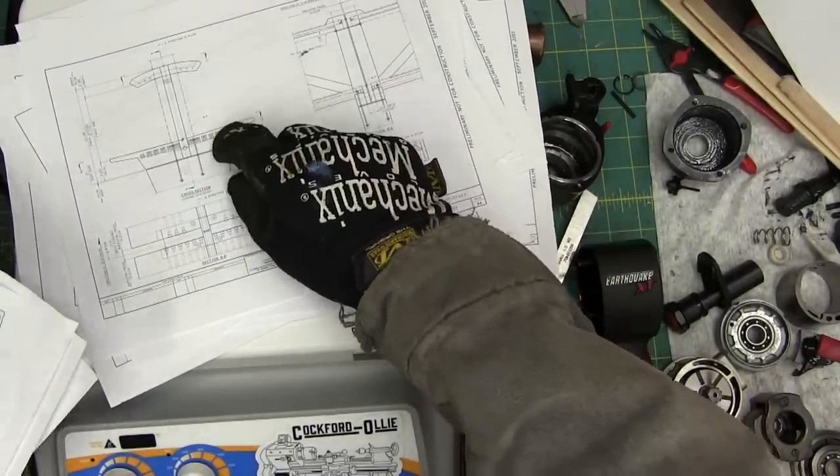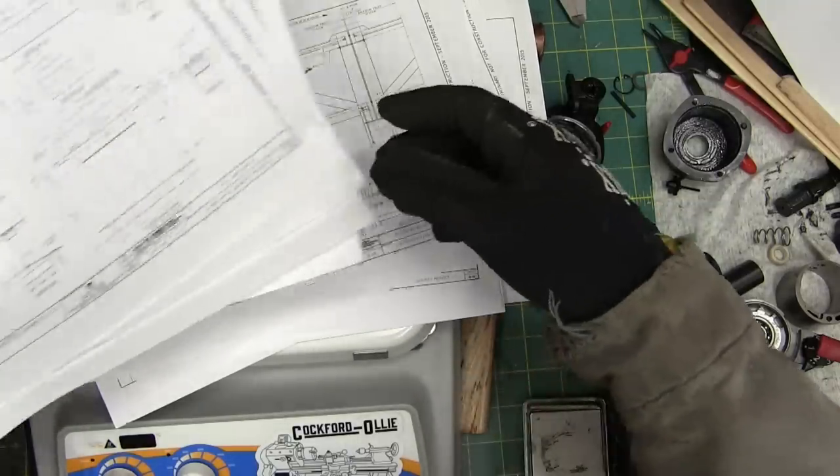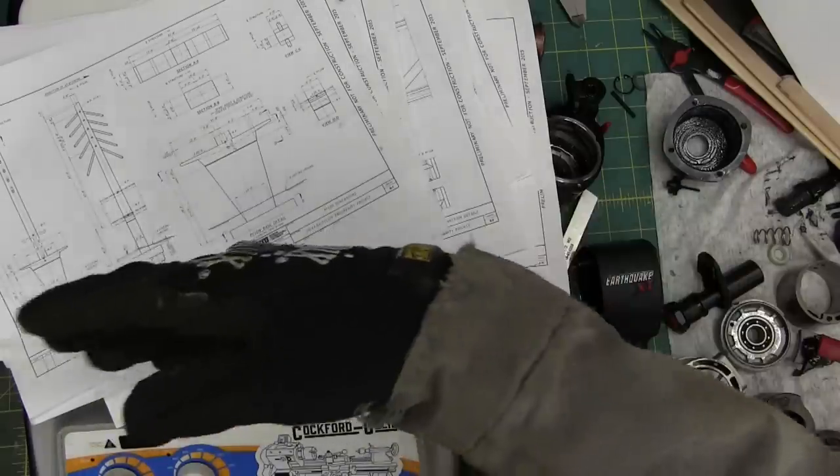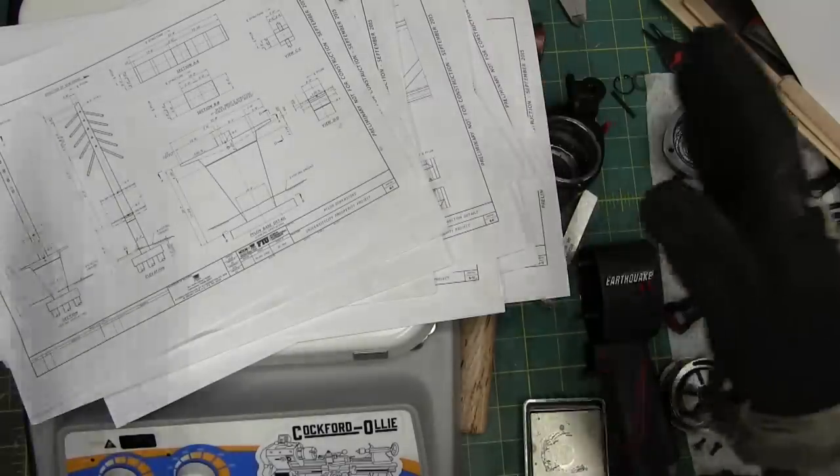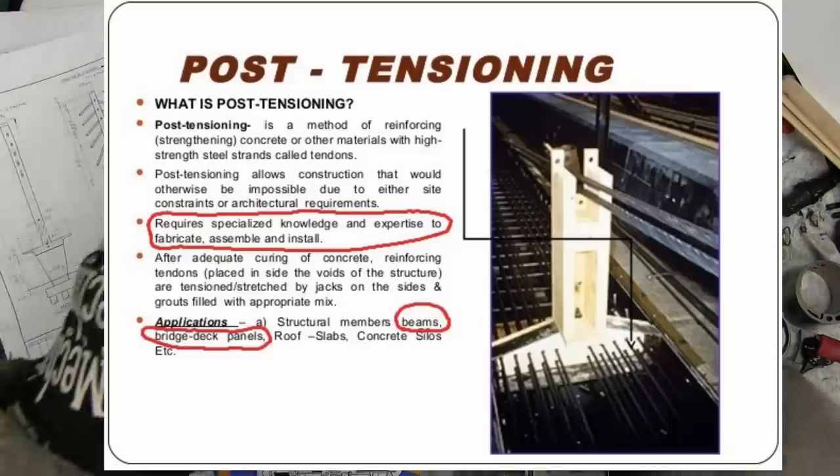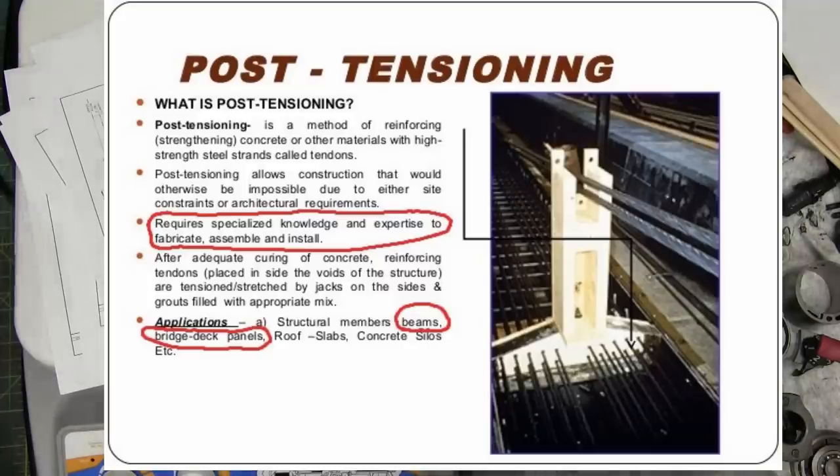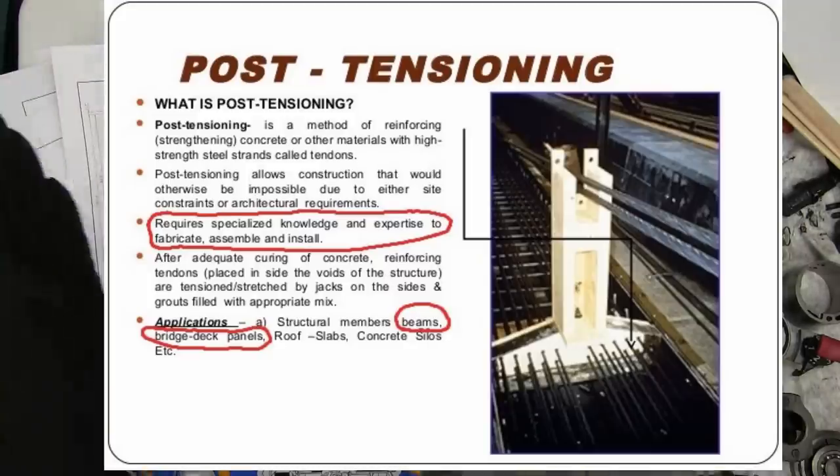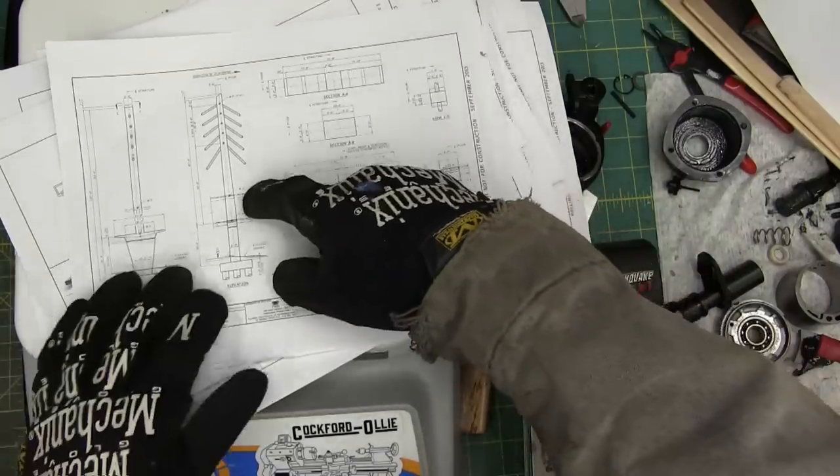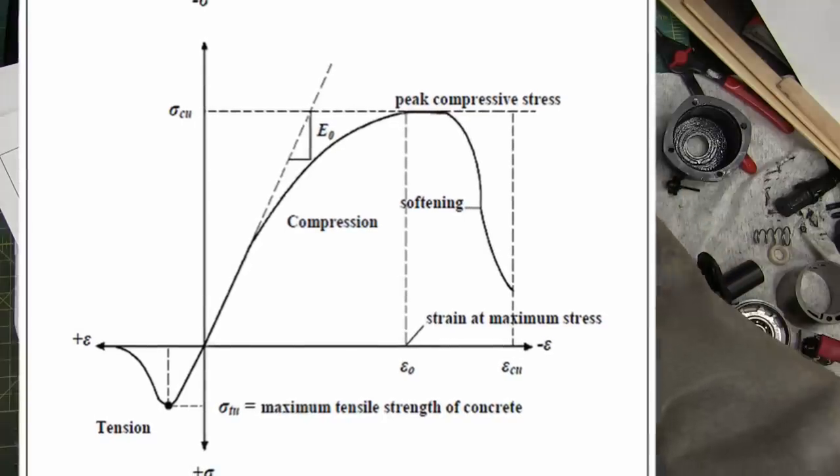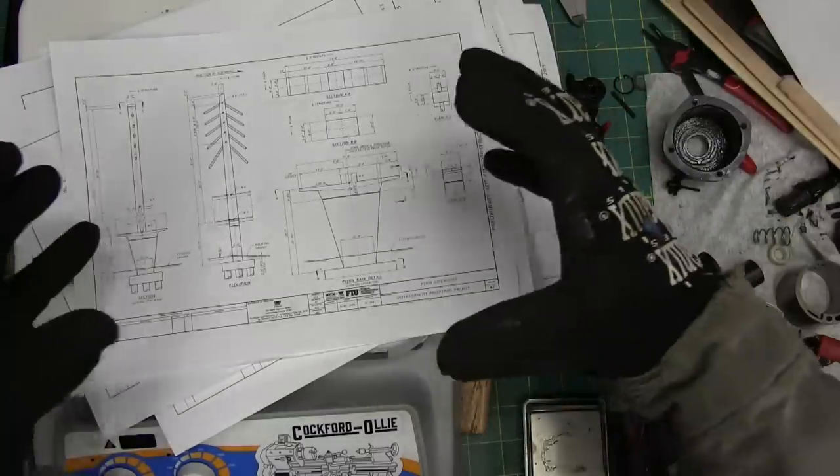Now this is a post-tensioned member. So I talked previously in the video about pre-tensioning concrete where they put cables through it, pull them taut, and then once the concrete has set they release them. There's another way to do that, it's called post-tensioning. They have channels in the section and they put rods through there, tension members, and then after the fact, after the concrete's cured, they pretension and tighten them up and that squeezes the whole section.